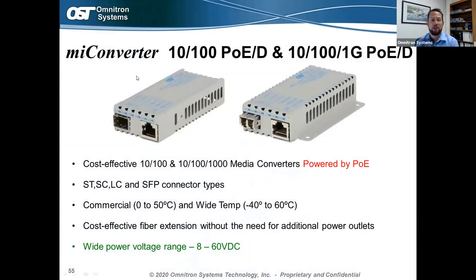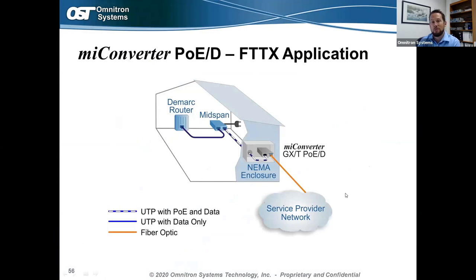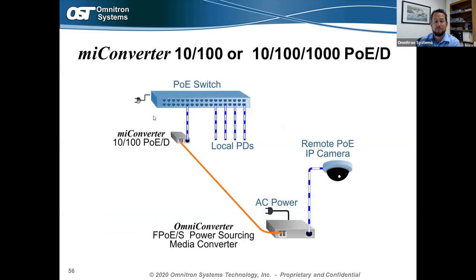One more product to cover: the myConverter PoE-powered media converters, or PoEDs. These come in 10/100 speed or triple-speed 10/100/1000 Mbps versions. They're called PoEDs because they're powered devices — powered by PoE. They come with a variety of fiber connector types and temperature ranges, and a very wide power voltage rating of 8 to 60V DC. The great part is they can be powered by PoE. A common application: a service provider gives you a fiber handoff at the building edge; this device can be powered right into the copper port from a PoE switch, providing fiber-to-copper conversion where no local power is available.